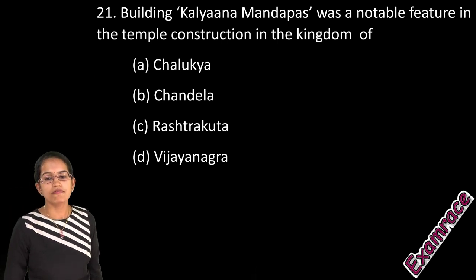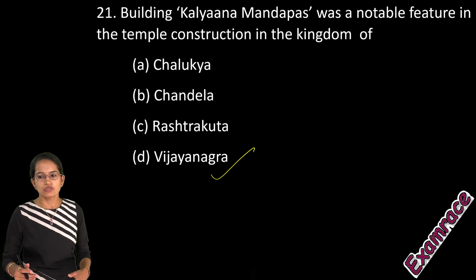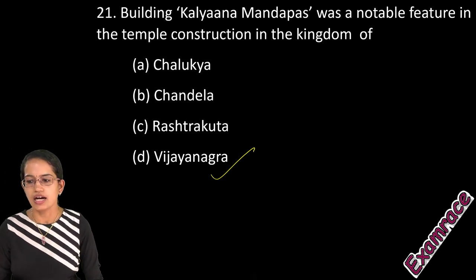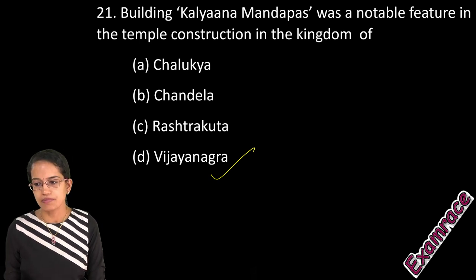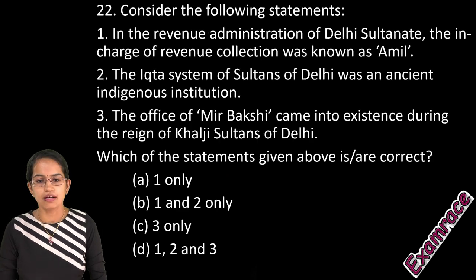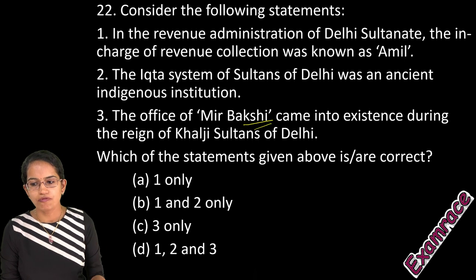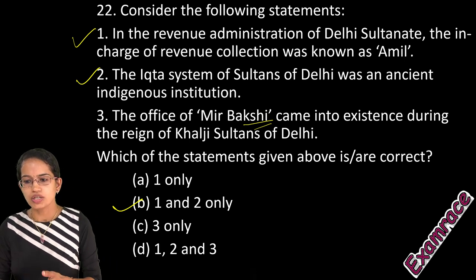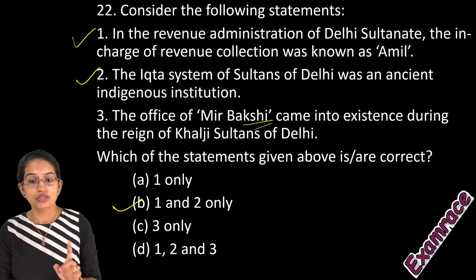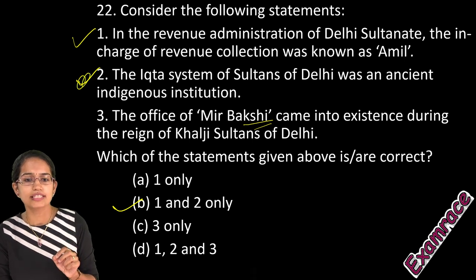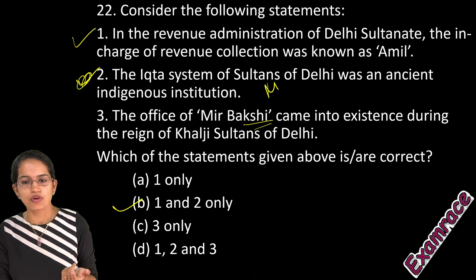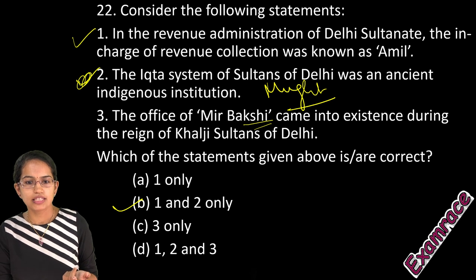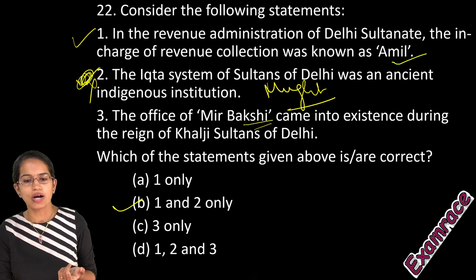Kalyan Mandapa is a notable feature of the Vijayanagara Empire, seen in the Rameshwaram temple and the Seshagiri temples in Sri Rangam. Mir Bakshi was the office of military affairs during the Mughal period, so options one and two are correct. The Ikta system of the Delhi Sultanate was not indigenous — it came mainly from the Mughals. The revenue administration in the Delhi Sultanate was in charge of the Amir, so only option one is the right answer.